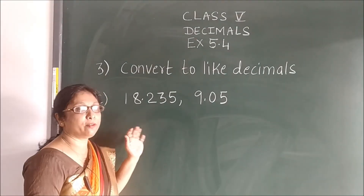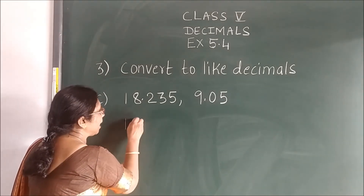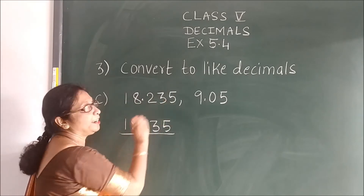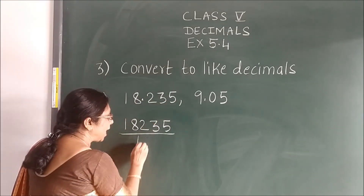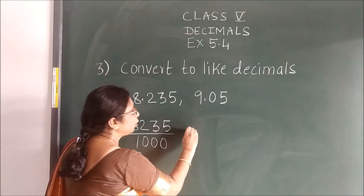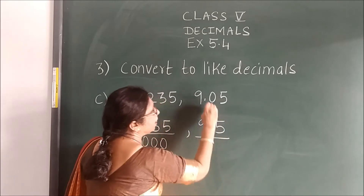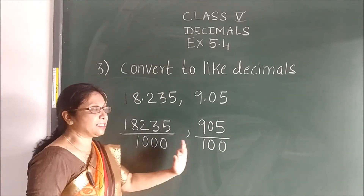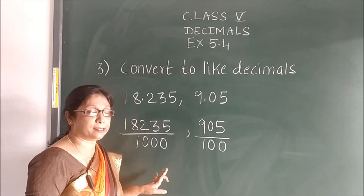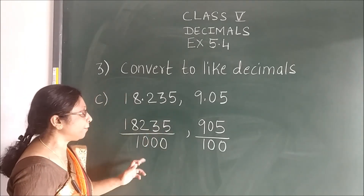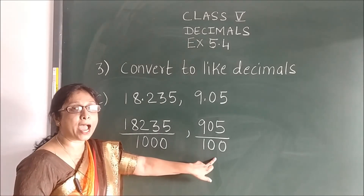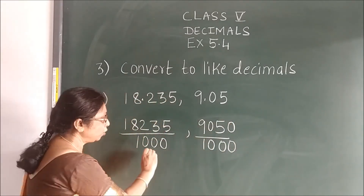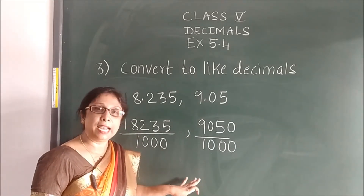Now we will see some more. First, you write the number as it is without the point. After writing the number, count after point how many numbers are there: 1, 2, 3. So you will add 3 zeros. Then the up number you will write. After point, 2 numbers — so put 2 zeros. Now this is unlike decimal; denominators are not same. This is 3 and this is 2. You are going to add here 1 zero. When you add 1 zero here, same number of zeros you will add up. Now you see denominators are same. This is termed as like decimals.